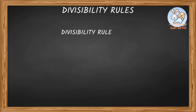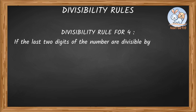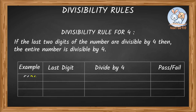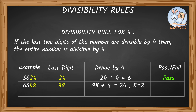Let's look at the divisibility rule for 4. Just look at the last two digits of the number. If they're divisible by 4, then the entire number is divisible by 4. For example, last two digits 24 divided by 4 equals 6, so the whole number is divisible by 4. For 6,598, the last two digits are 98, and 98 divided by 4 has a remainder of 2, so it doesn't pass. For negative 258, the last two digits 58 are not divisible by 4, so the whole number does not pass the test.